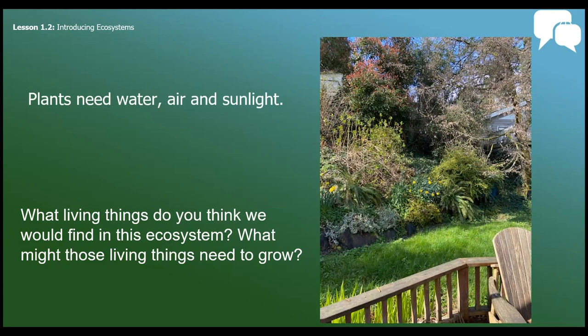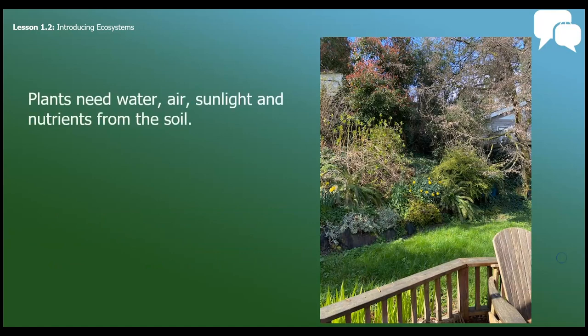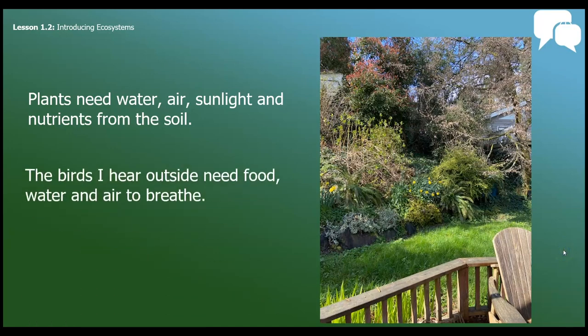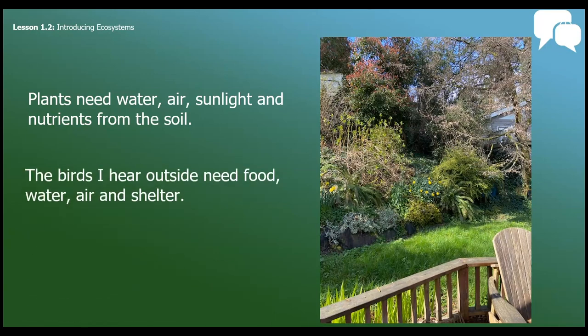Plants need water, air and sunlight. What else? Plants also need nutrients from the soil. I found lots of birds in my backyard, and what they need is food, water and air to breathe. They also need shelter.